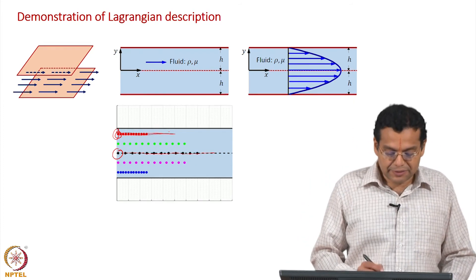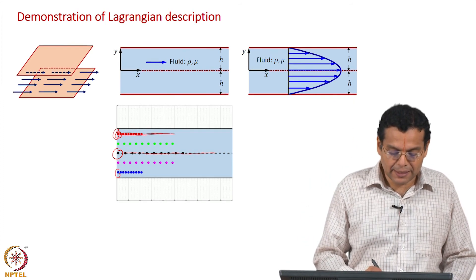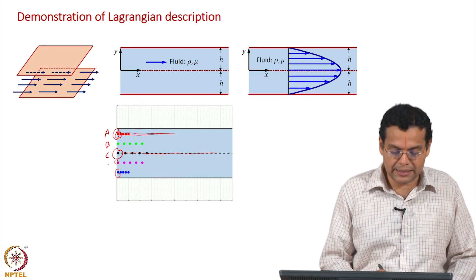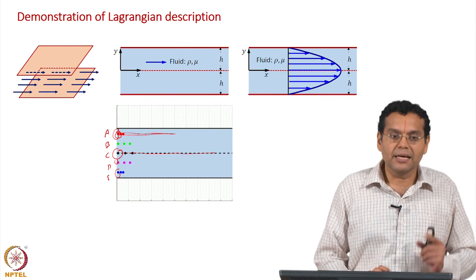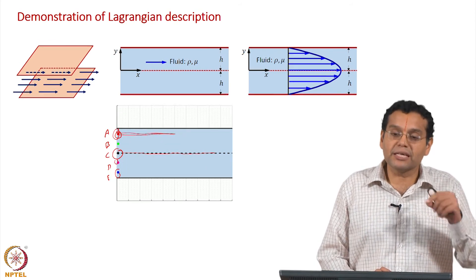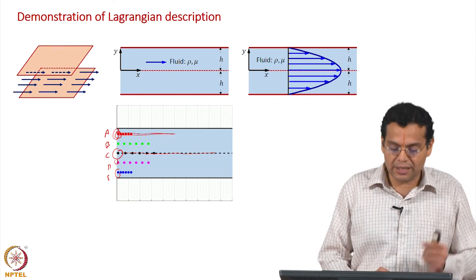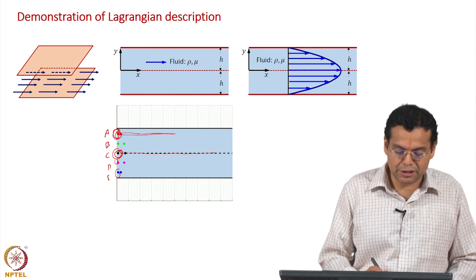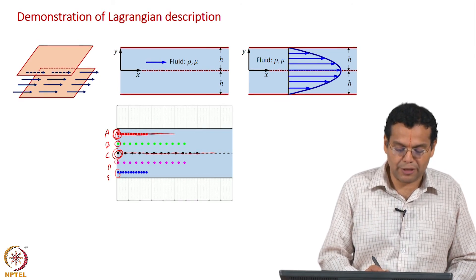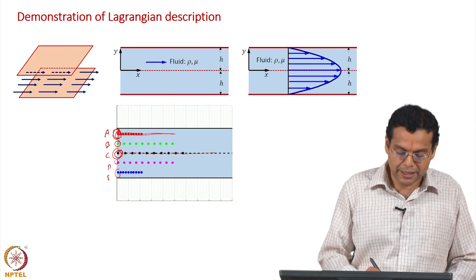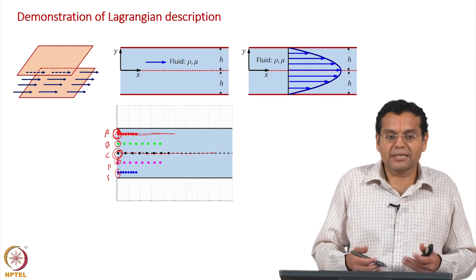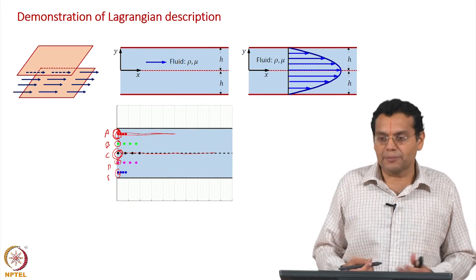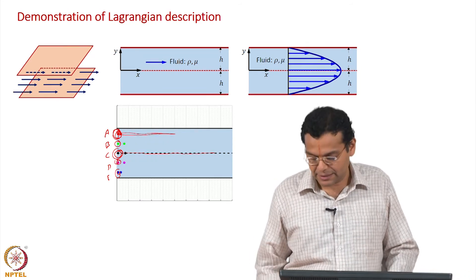We can track different fluid particles — labeling them A, B, C, D, etc. Instead of labels, we use their initial positions as identifiers. For example, initial positions could be 0, 0.2, 0.4 or minus 0.2, minus 0.4, and so on. These initial positions identify the fluid particles instead of using the labels A, B, C, D.